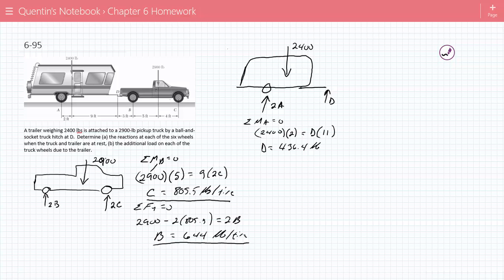And then do the sum of the forces in Y equals zero. So you have 2,400. The downs are equal to ups. So 2A plus D, which is 436.4. So therefore, A is equal to 981.8 pounds per tire. So at A, the trailer tires are each experiencing 981.8 pounds of force.